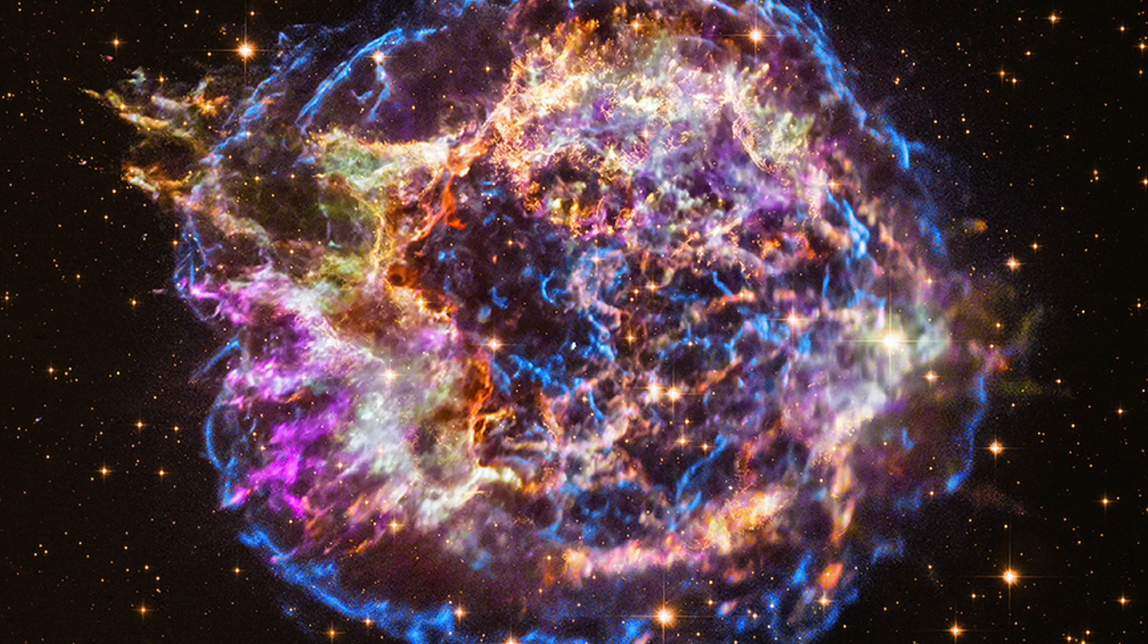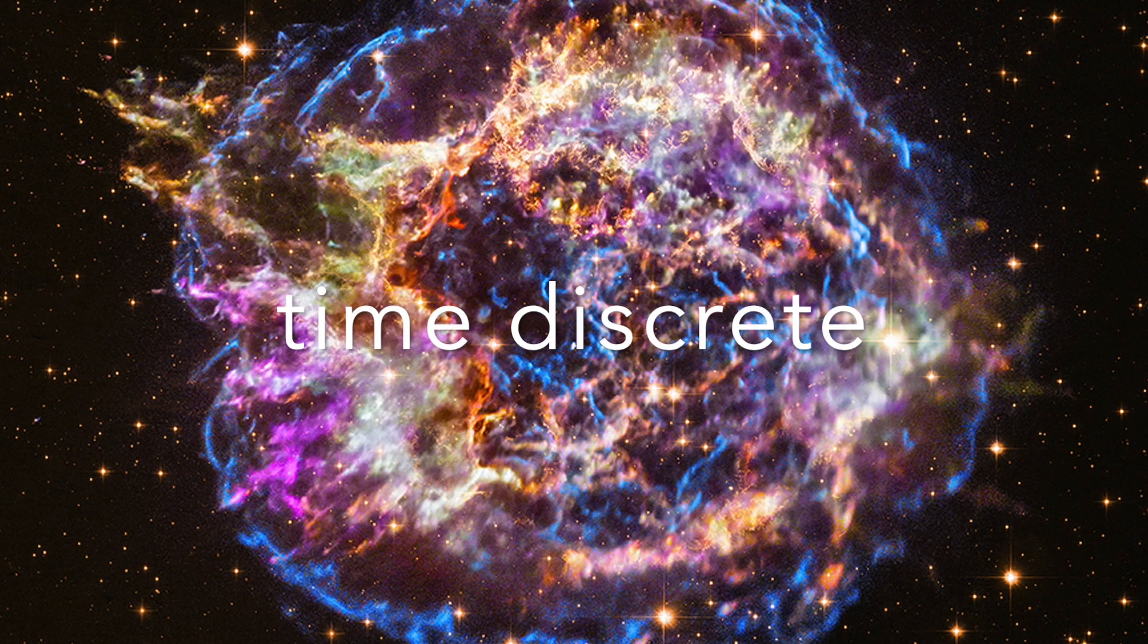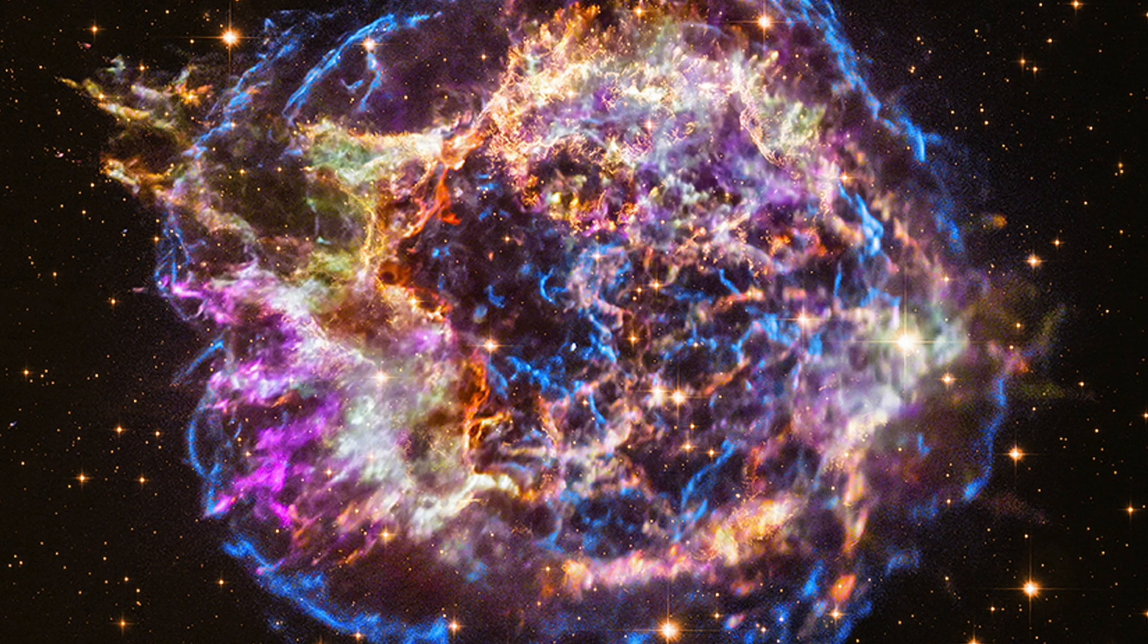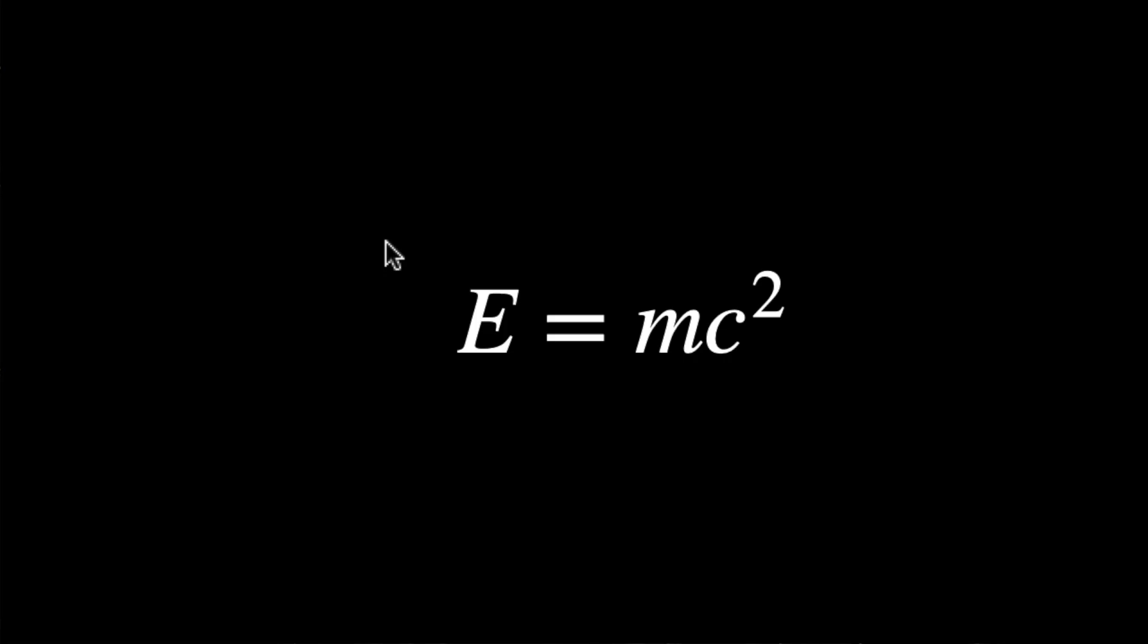Since time is discrete in the model, we can perform the following simplification. The integral is replaced with a summation with only two distinct values for the velocity, zero and c. This will give us the final result, e is equal to m c squared.